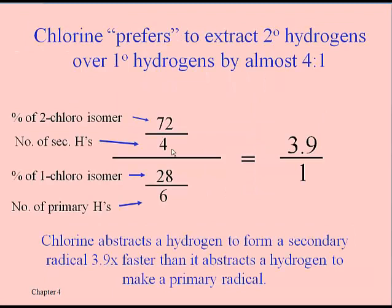This next slide shows how we can calculate the degree to which we have a preference for making the 2-chlorobutane as opposed to 1-chloro. Those percentages that are actually found — 72% for the 2-chloro, 28% for 1-chloro — are divided by the number of hydrogens that could be removed to give that product. There are four possible hydrogens that could be removed to give us the 2-chloro product, and six hydrogens any one of which can be removed to make 1-chlorobutane. When you reduce those ratios down, it turns out to be about 3.9 to 1, almost 4 to 1.